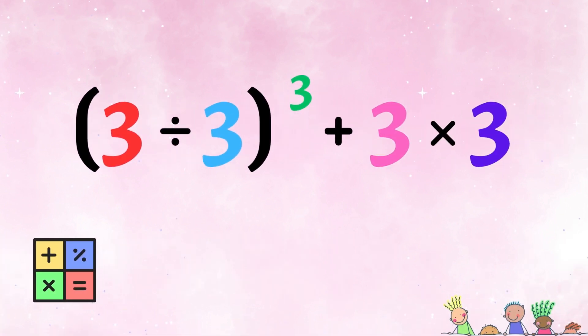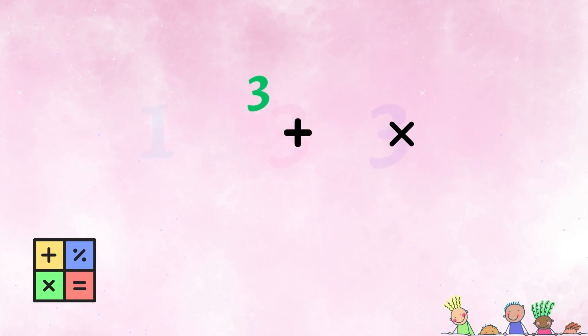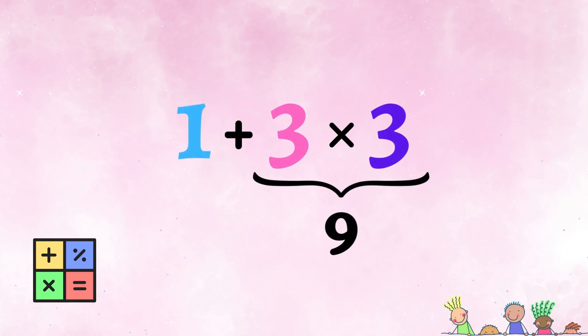The next possibility goes like this. 3 divided by 3, take all of that to the power of 3, and then plus 3 times 3. Brackets first, which means we solve 3 divided by 3, that's 1. Then exponents, so 1 to the power of 3 is still 1. Next is multiplication, so 3 times 3 equals 9. We're left with 1 plus 9, which again gives us 10.